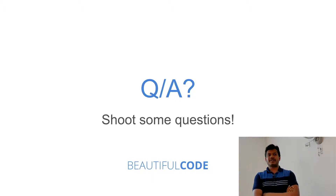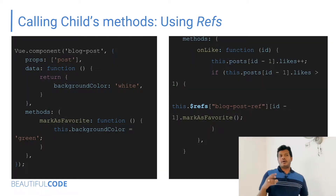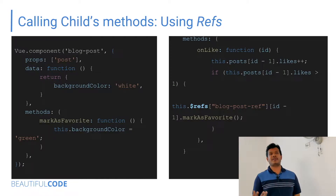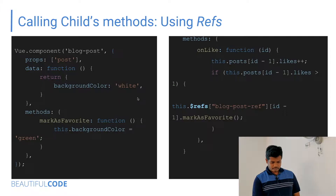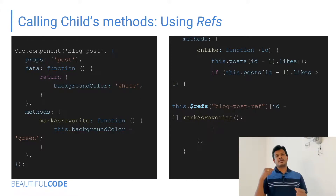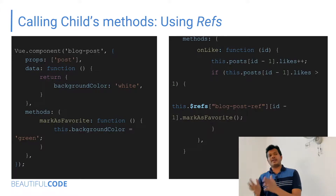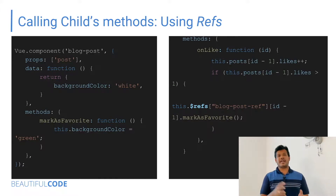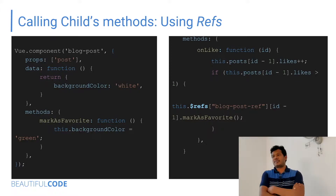On the question about refs: when the component is first rendered, if references are mentioned in the template, it creates references for each child component rendered and keeps those references at the parent in an array, using the ref attribute on the HTML element.